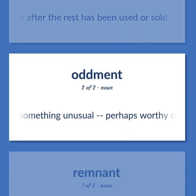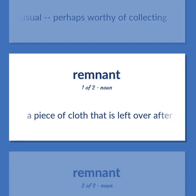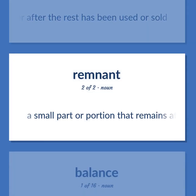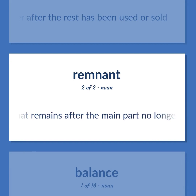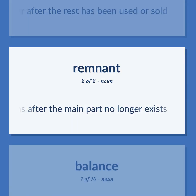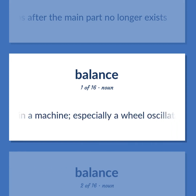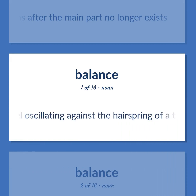Oddment: something unusual, perhaps worthy of collecting. A small part or portion that remains after the main part no longer exists. A wheel that regulates the rate of movement in a machine, especially a wheel oscillating against the hairspring of a timepiece to regulate its beat.